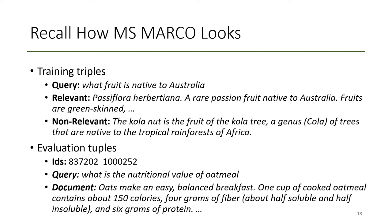The MS MARCO data looks like this: we have training triples with queries, one relevant document, and one non-relevant document. Those training triples are of good quality because the relevant is human-judged and the non-relevant document can be sampled randomly from the collection — the relevant document definitely is relevant and the non-relevant is very probably non-relevant. For evaluation, we have a document ID and query ID so we can map the texts back to the relevance labels.